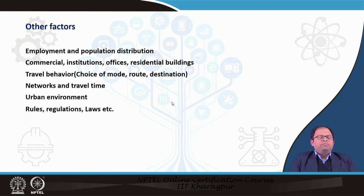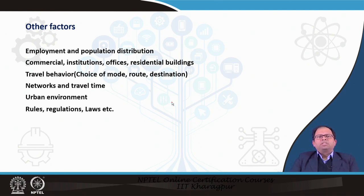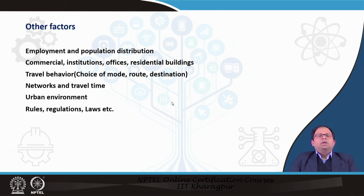Another major factor very linked with transportation is the urban environment — not only transportation but land use as well. For example, if there is too much built-up area it may lead to flooding. If there are a lot of cars along a particular corridor, a lot of emission takes place and people living along that corridor would probably suffer from diseases related to air pollution. Along with land use and transportation, we need to study these impacts and phenomena so we can understand the impacts of different policies. There are also rules, regulations, and laws which guide us on how to plan for urban areas, and whatever plans we make should be within the constraints set by these rules.